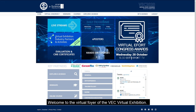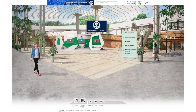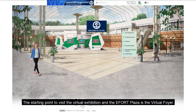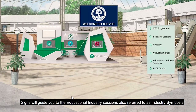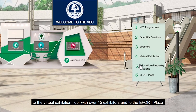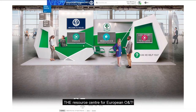Welcome to the virtual foyer of the VEC Virtual Exhibition. The starting point to visit the virtual exhibition and the e-Fort Plaza is the virtual foyer. Signs will guide you to the Educational Industry Sessions, also referred to as Industry Symposia, to the virtual exhibition floor with over 15 exhibitors, and to the e-Fort Plaza, the Resource Centre for European O&T.